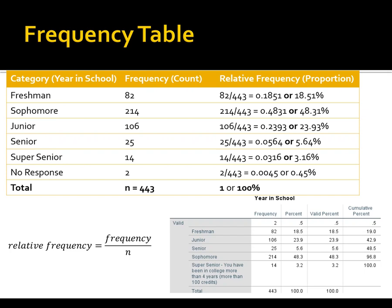I'll ignore the valid percent for now and talk about the cumulative percentage, which is basically taking the percentages and adding them up as we go down. The cumulative percentage aligned with freshmen is 18.5 plus 0.5, giving 19%. The cumulative percentage for juniors is 23.9 plus 18.5 plus 0.5, giving 42.9%. The cumulative percentage might be used when constructing a Pareto chart. The SPSS output gives a little more information than we necessarily need, but the frequency and relative frequency are the key descriptive statistics for categorical variables.